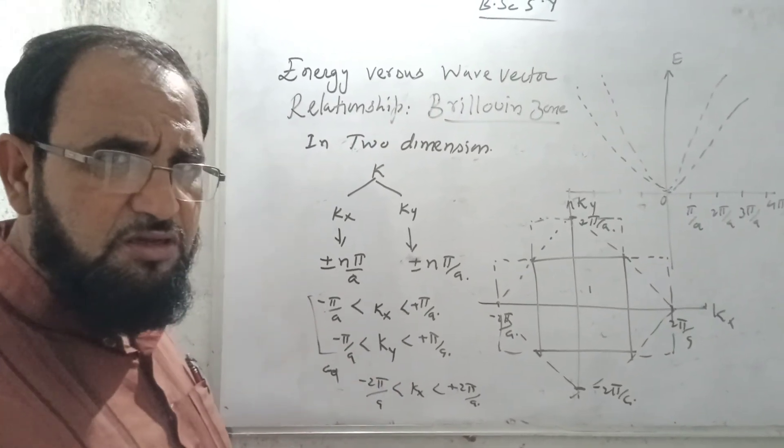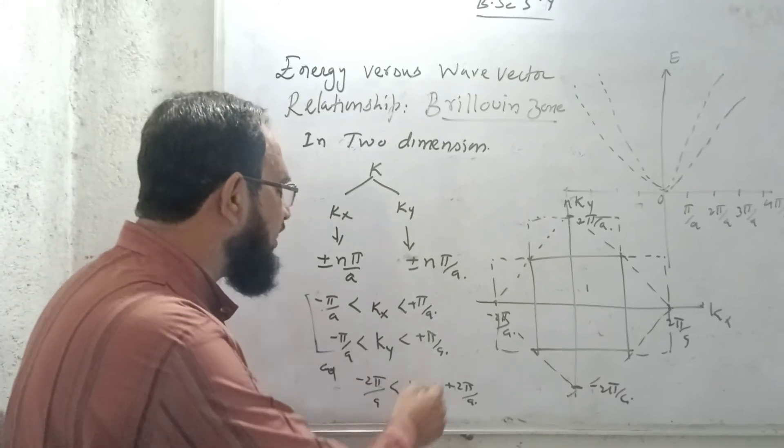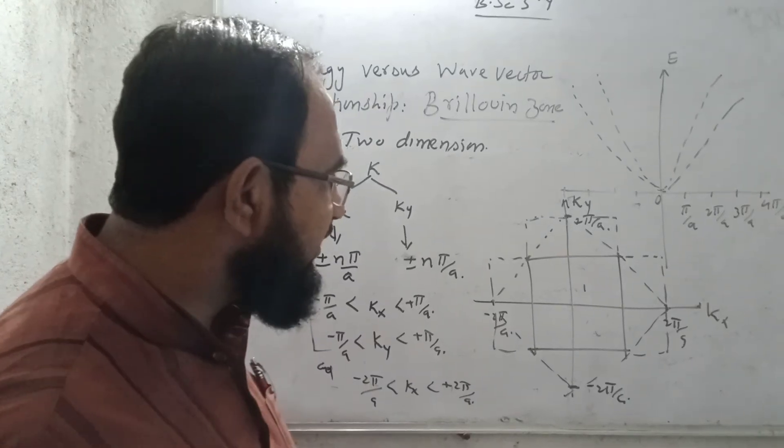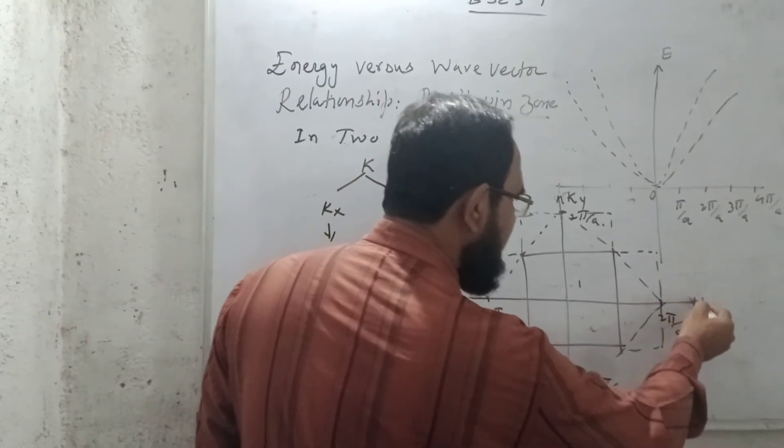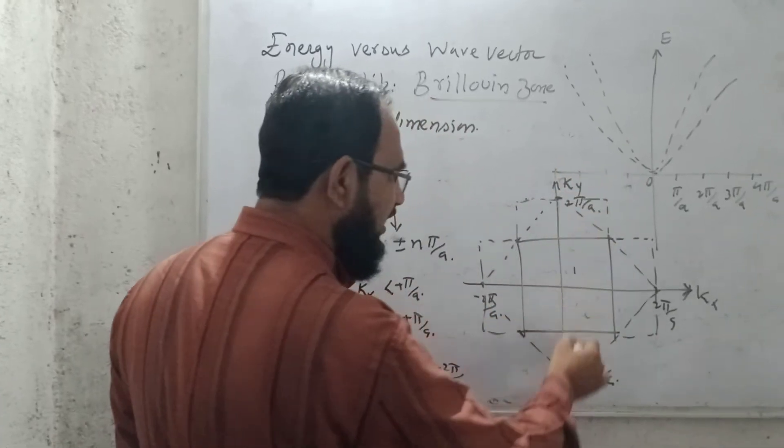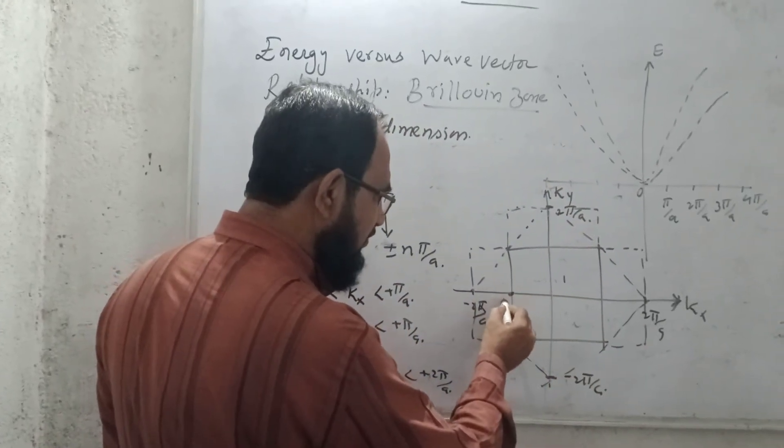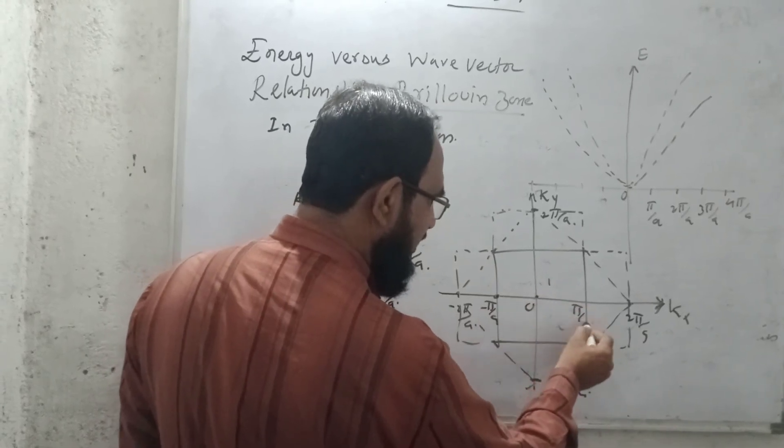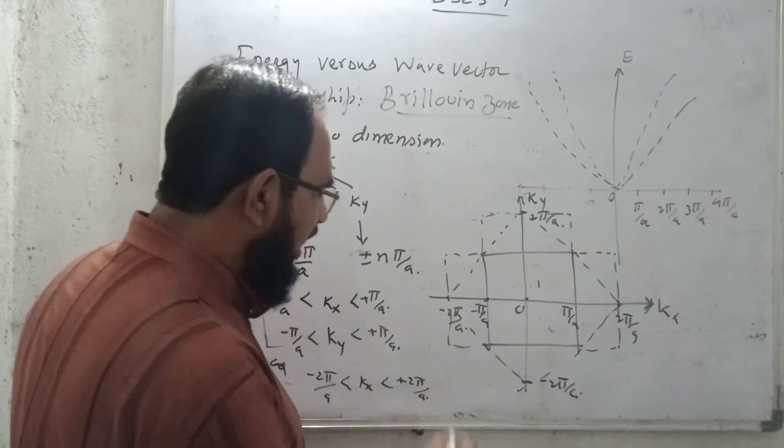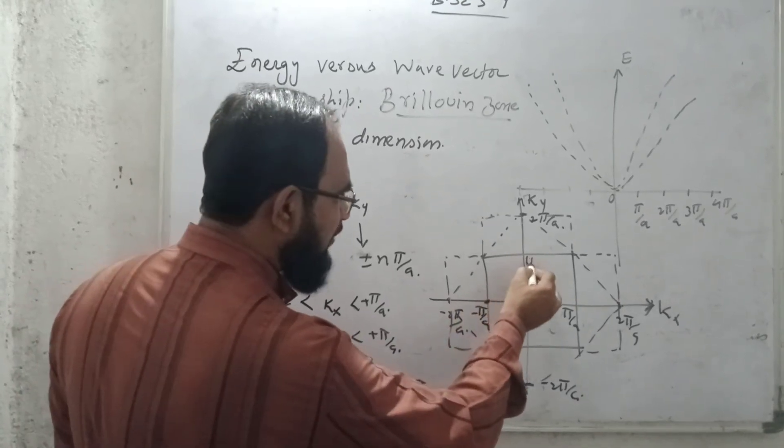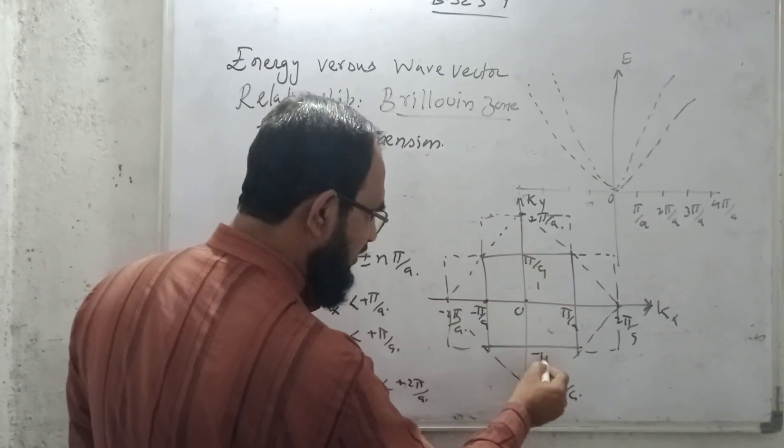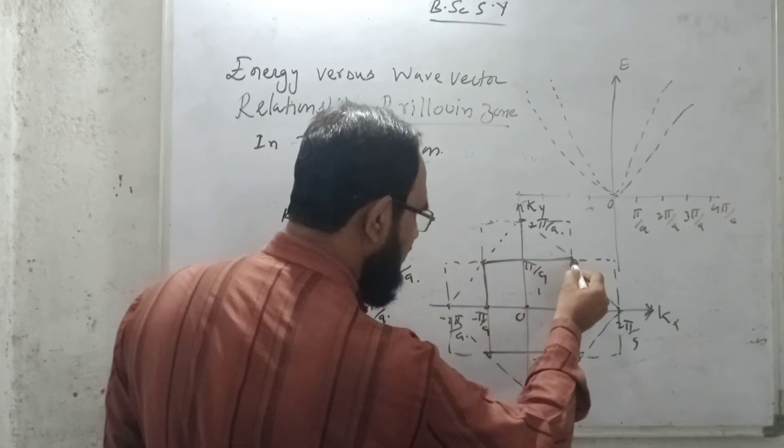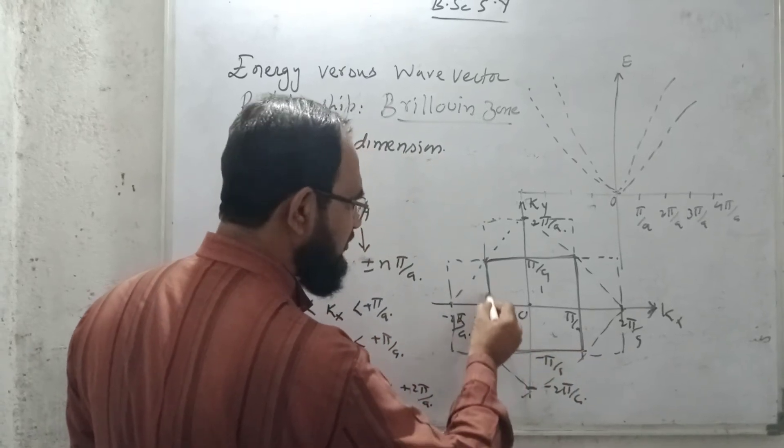Now for the second zone, I will take here minus 2π/A, KX is equal to between plus 2π/A. So if I take the KX along the X axis and KY along the Y axis, here are the interval π/A, 0, minus π/A, π/A, 2π/A on both the sides. So I will make the boundary as π/A plus and minus π/A. I will take the boundary of this one, means this part, and this is called as the first Brillouin zone.